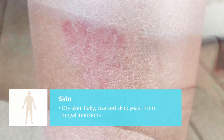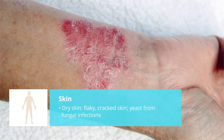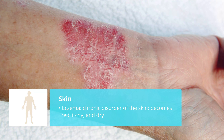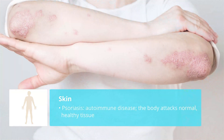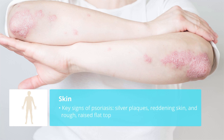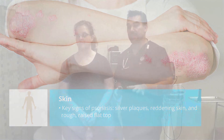We also see eczema, which is a chronic disorder of the skin where the skin becomes red, itchy, and dry. An autoimmune disorder called psoriasis is also very common, where the body attacks normal healthy tissue. A key sign is silver plaques and reddening skin that's roughed, raised, and even flat on top.